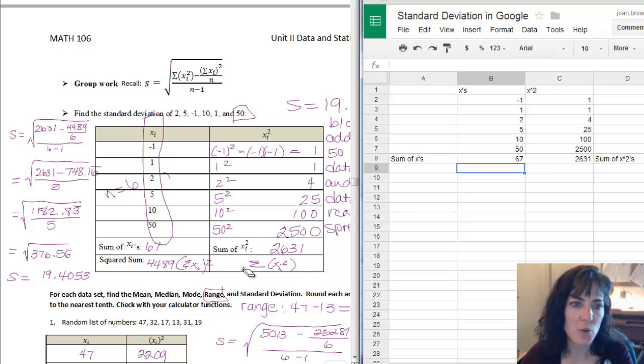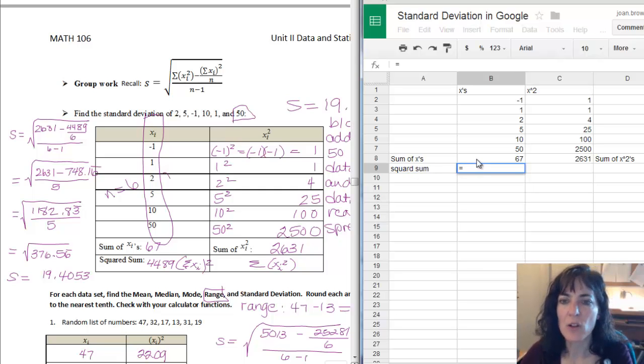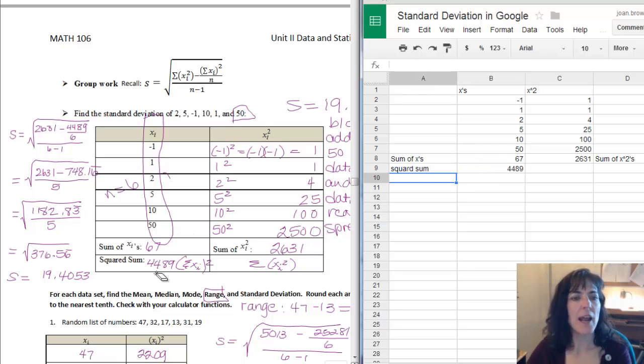The next thing I need according to my table on the original table I made was this squared sum. So I'll put as the title squared sum. And then I can just take the number right above and square it. So I have to tell Google equals first. And then click on the data value I want to square. And then use the caret, remember it's right above the six. And then push enter, 4489. And that's exactly what I got on my table before. So I know that part's correct as well.